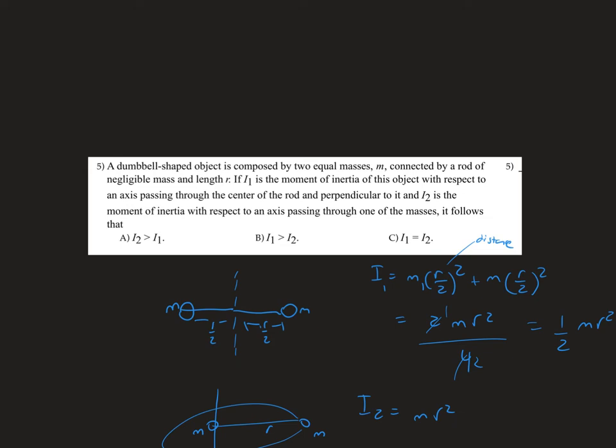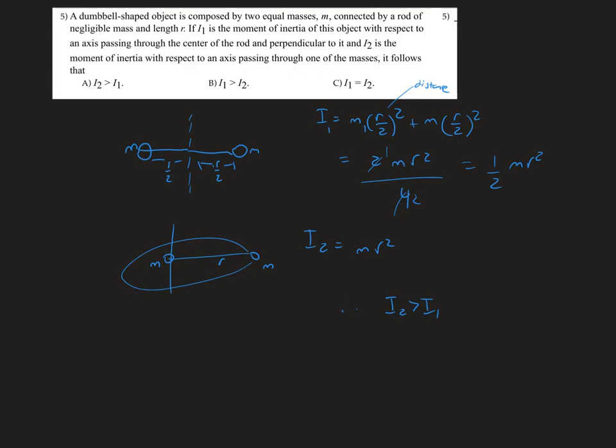It says that if I₁, the moment of inertia 1, is the moment of inertia of this object with respect to an axis passing through the center of the rod and perpendicular to it, and I₂ is the moment of inertia with respect to an axis passing through one of the masses, then it follows that.